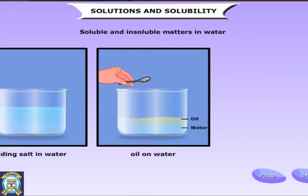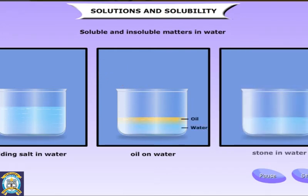Salt and sugar dissolve in water, but stone or a piece of glass don't. Oil will not mix with water. So glass, stone, wood, and oil are insoluble matter. But salt and sugar are soluble matter.